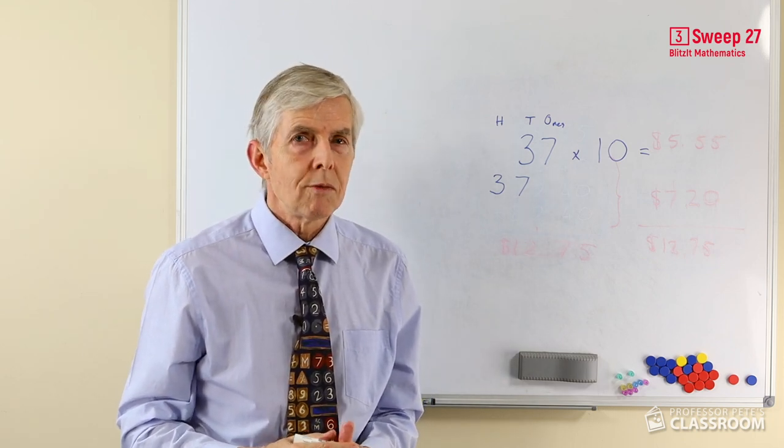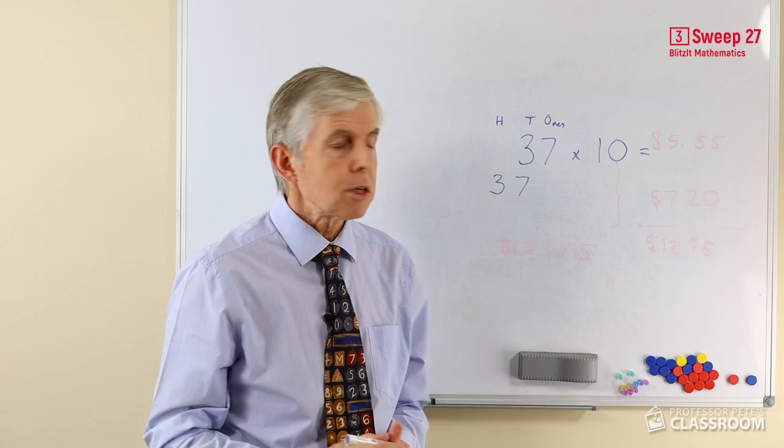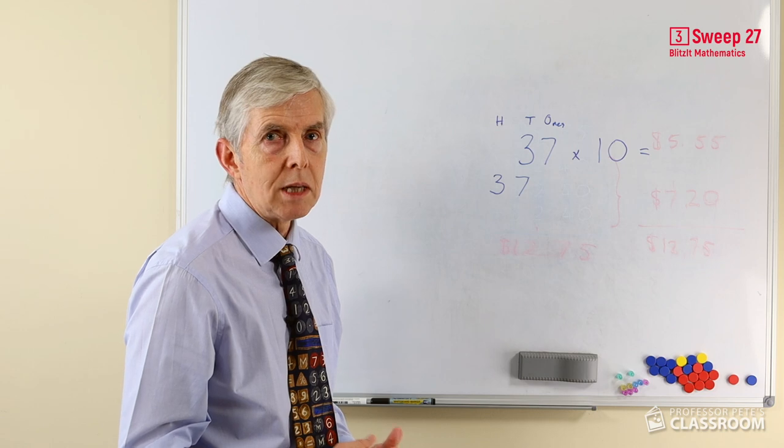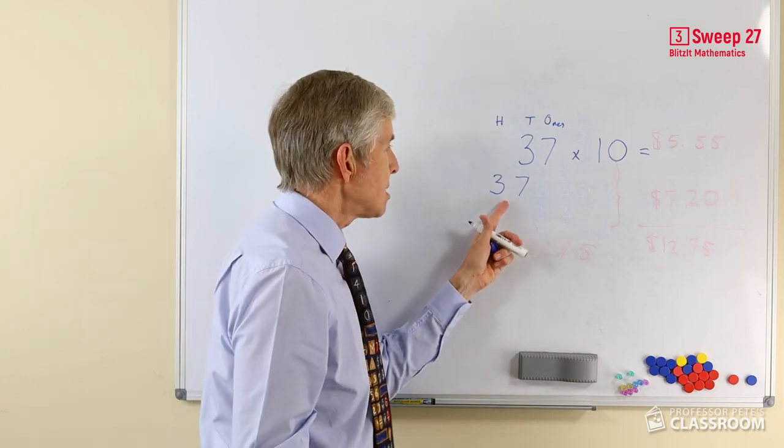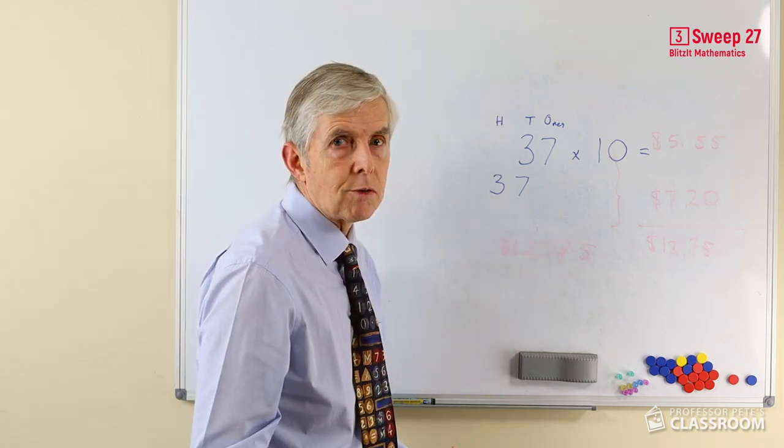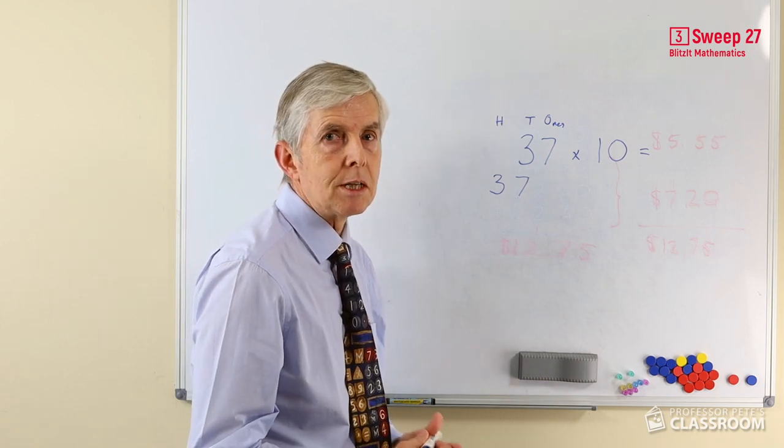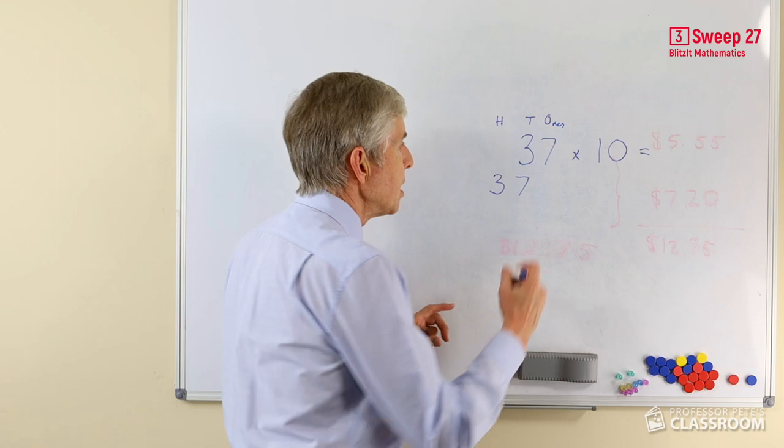It's called a placeholder. Because without the zero—ignoring the column labels which aren't normally there—that's simply 37 written in a different place. To force the 7 into the tens place and the 3 into the hundreds place, we need a digit here.